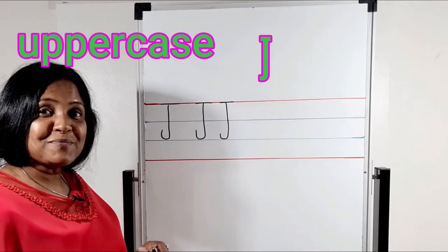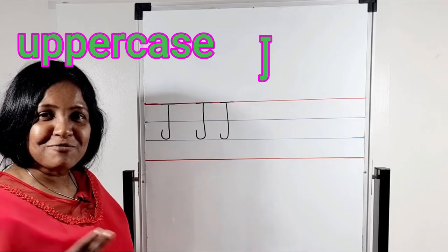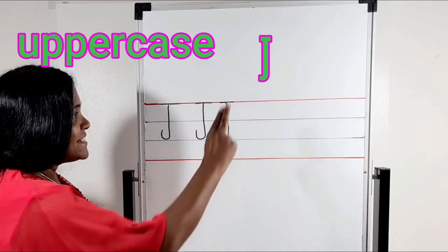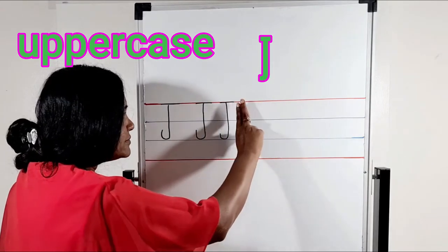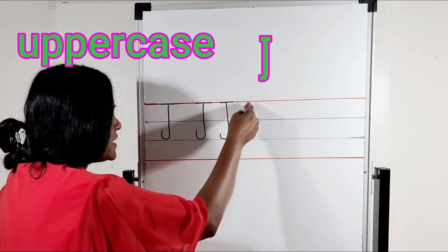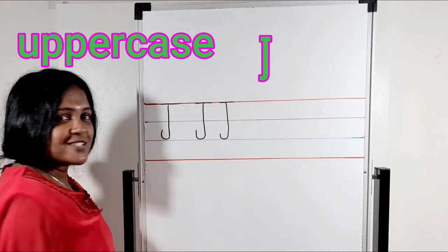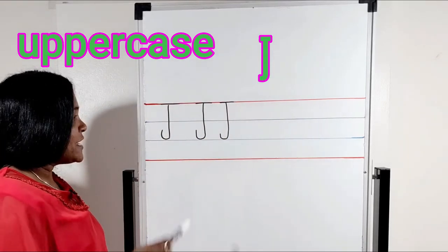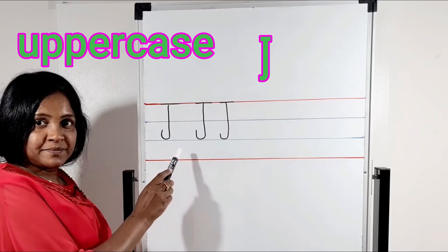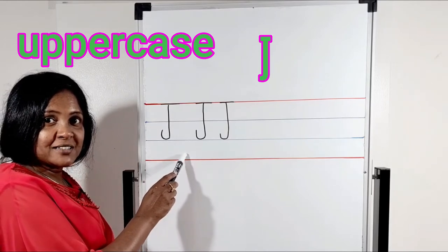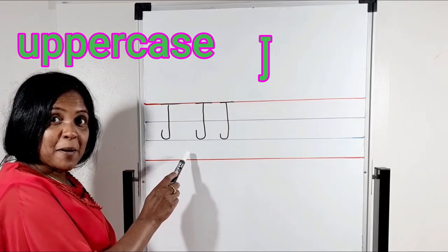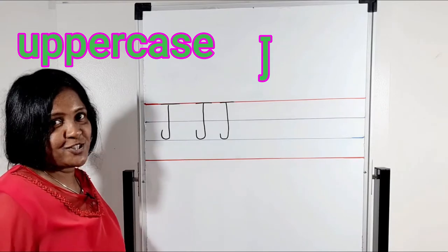Are you ready to practice with me? Take these two fingers. Standing line. And hook. Line across. Standing line. And hook. Line across. This we call as mother J. Uppercase J. Big J. Capital J.